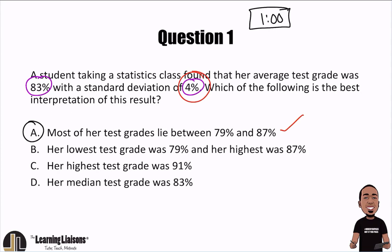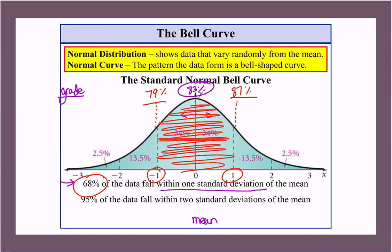When you take a look at B, her lowest test grade was 79%. That's not true, because the standard deviation keeps going down to 75%, then to 71% over here. So no, that wouldn't be her lowest grade.